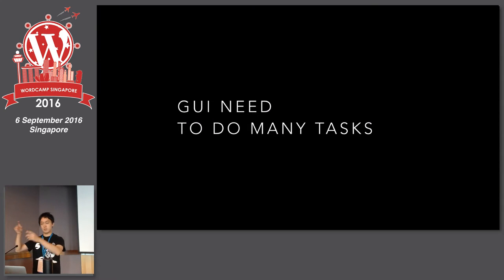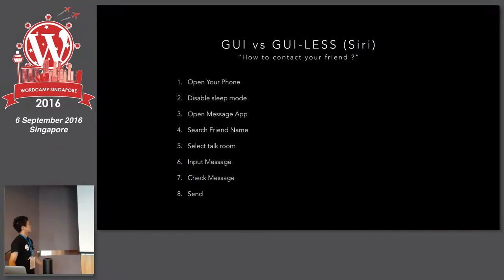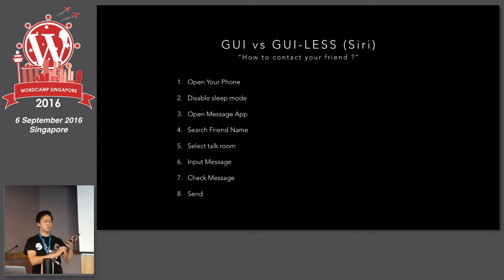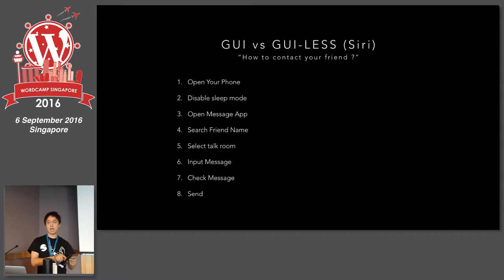GUI — like a web application, browser, and many applications — needs many tasks from us. For example, I contact my friend. First, use GUI like some message app: open my phone, disable silent mode, set up a messenger application, find my friend's name, create a talk room, input and type a message, check the message, and send. We need eight steps to contact my friend.